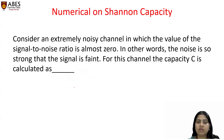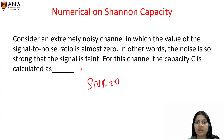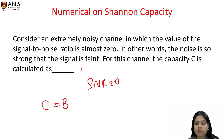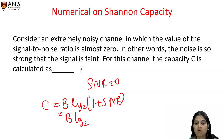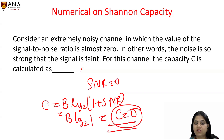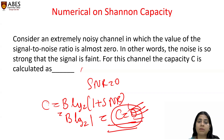Now we will see a numerical example. Consider an extremely noisy channel in which the value of SNR is almost 0. The capacity is: C = B × log₂(1 + 0) = B × log₂(1) = B × 0 = 0. Capacity 0 means you cannot receive any data through this channel because the capacity is 0.